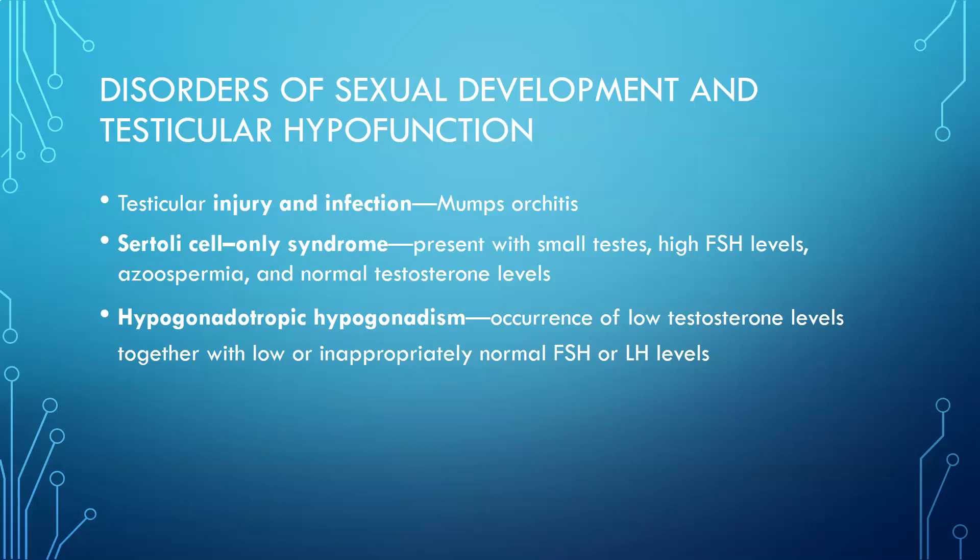There's also Sertoli cell only syndrome. It presents with small testes, high FSH levels, azoospermia, and normal testosterone levels. Hypogonadotropic hypogonadism is the occurrence of low testosterone levels together with low or inappropriately normal FSH or LH levels.